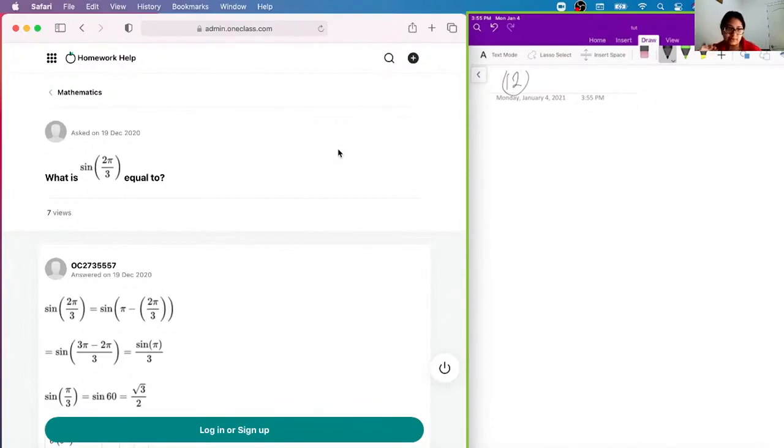what is sine of 2pi over 3 equal to? Okay, so you have sine, sine, 2pi over 3.